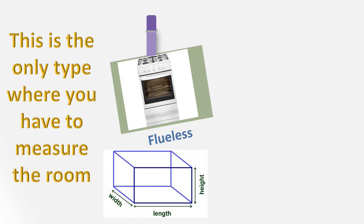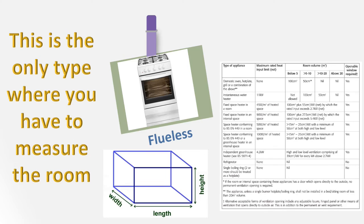You do this by multiplying the width, the length, and the height of the room together in meters. Then when you get the result — for example, 20 cubic meters — you apply this to the flueless chart in your gas book. You simply look for the appliance type, look for the size of the room, go along one line until it meets the other, and that will tell you how much ventilation is required for your flueless appliance.